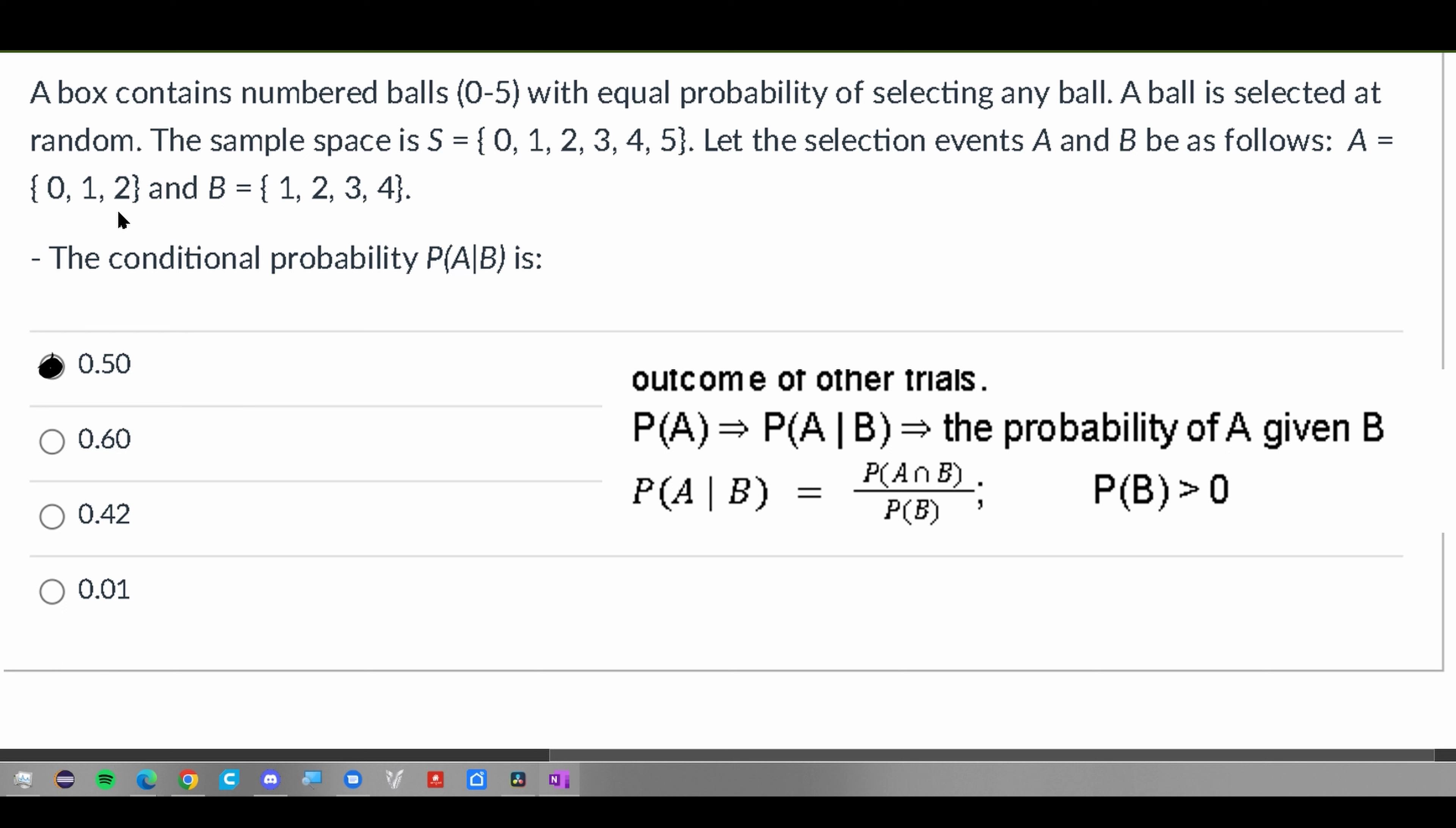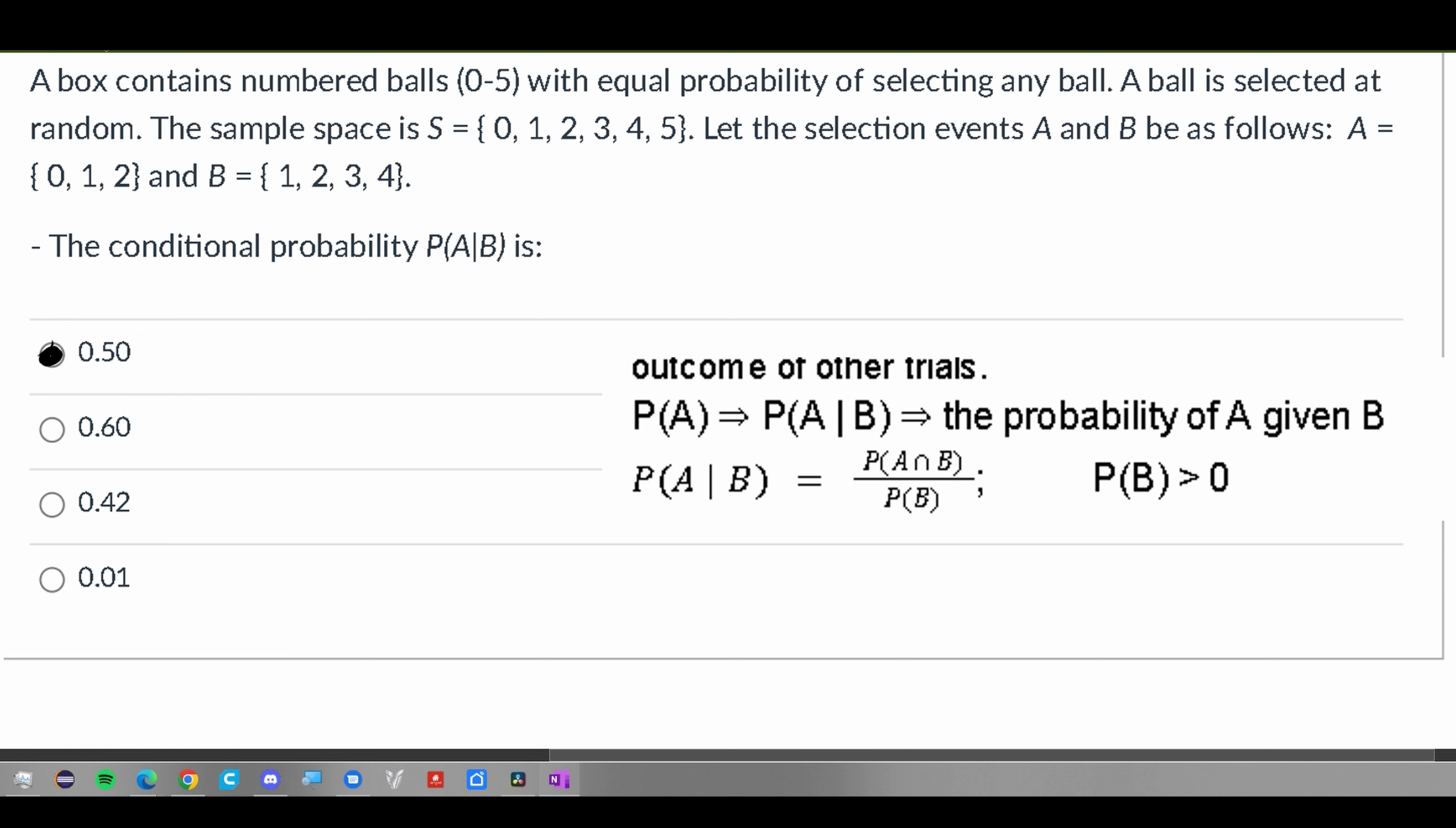We're asked to find the conditional probability of A given B. To do this, we look at the notes in the description below the like button and find this equation, which we'll use to solve for this.